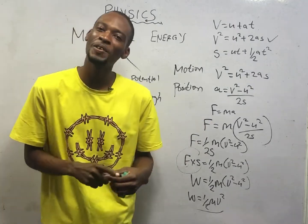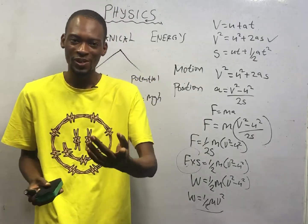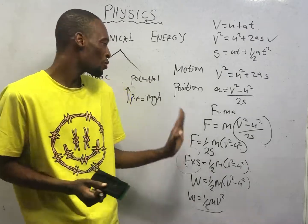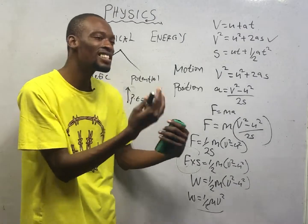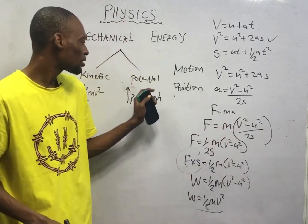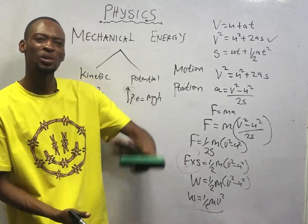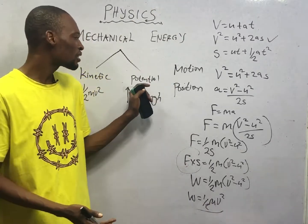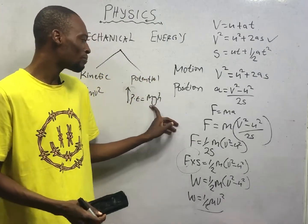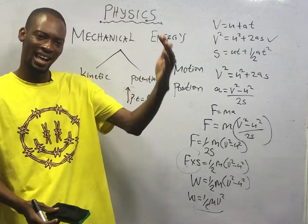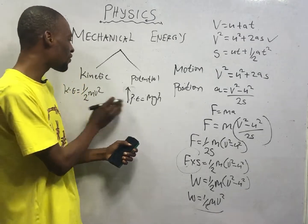Ladies and gentlemen, mechanical energy is the energy a body possesses due to position or due to motion, and it is divided into kinetic energy and potential energy. While kinetic energy is the energy a body possesses due to motion, potential energy is the energy a body possesses due to position. As you climb up, as you go high, you possess potential energy, because you are overcoming your own mass — your own weight. Weight is mass times gravity, then you are at a particular height.